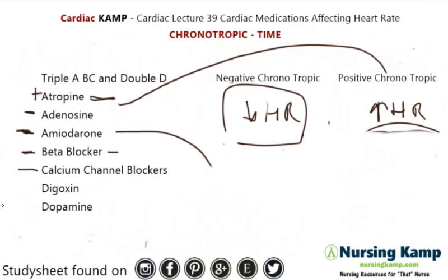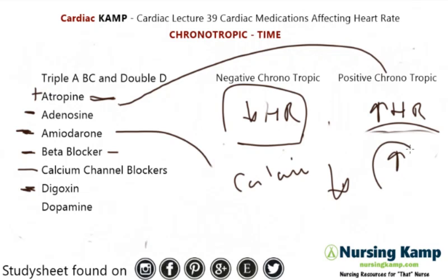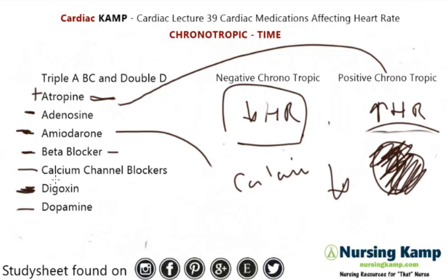Digoxin is a bit interesting — it's a cardiac glycoside that slows down conduction, making it a negative chronotropic, but it also has a positive inotropic effect, which I'll talk about more when we get into inotropic medications.